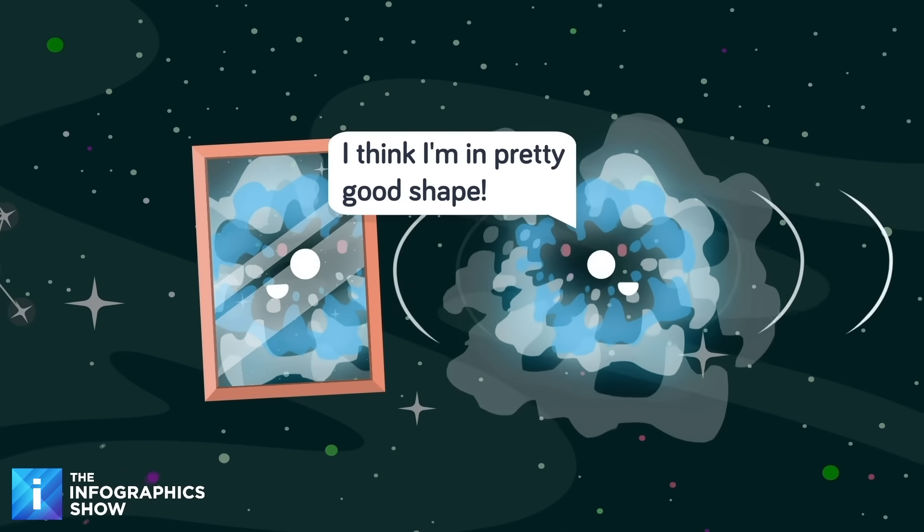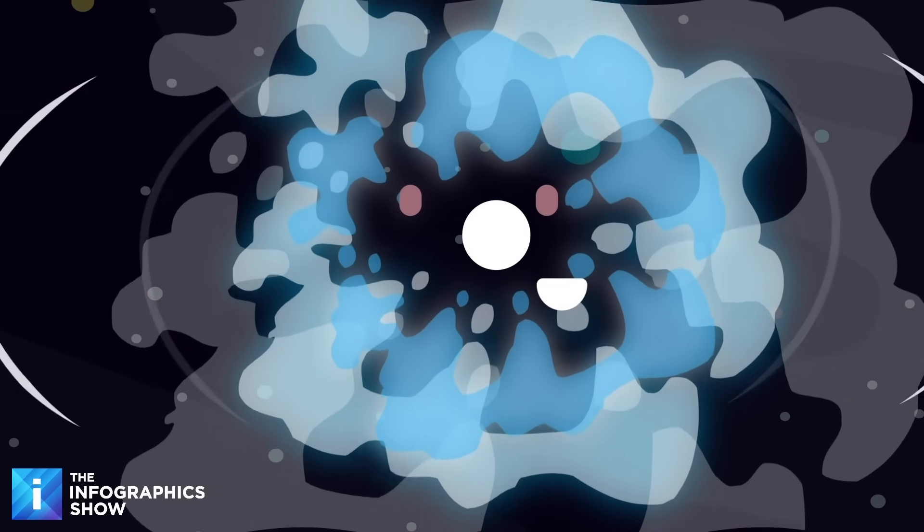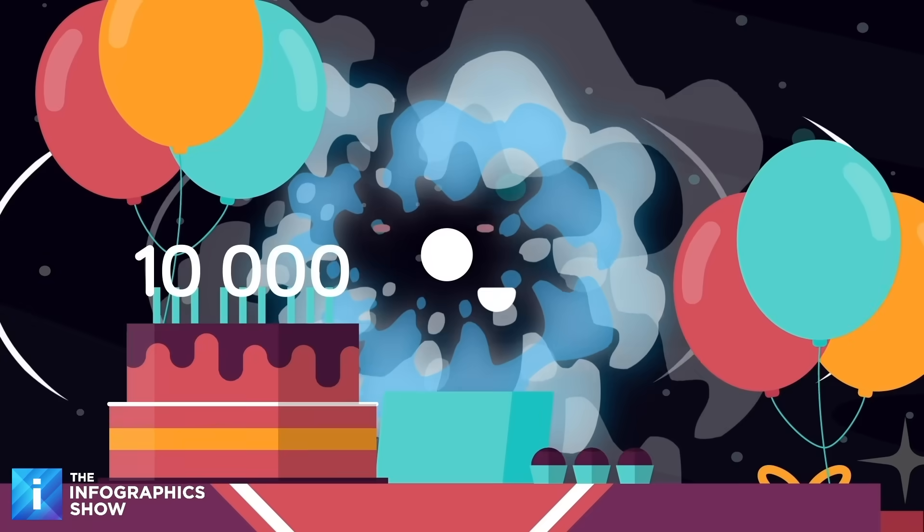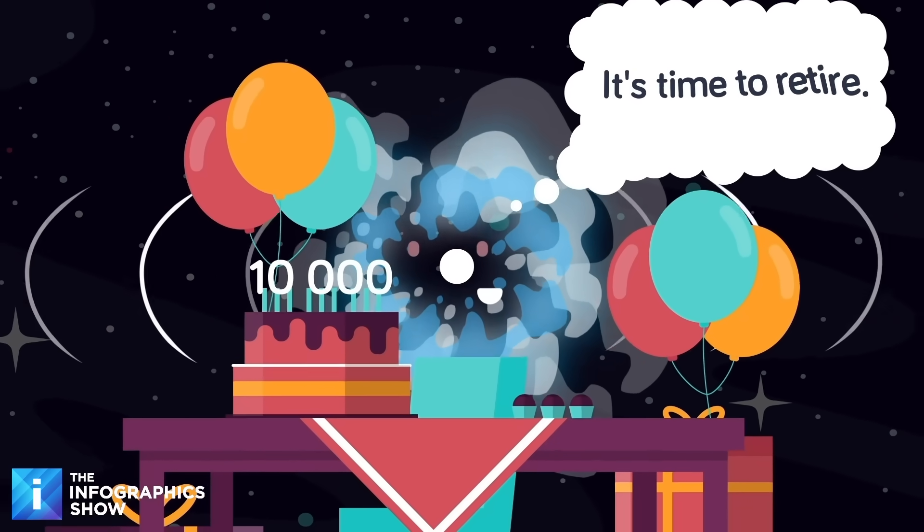There are only 30 known magnetars in our galaxy, but scientists suspect there could be more. They only stay active for about 10,000 years, and then they retire.